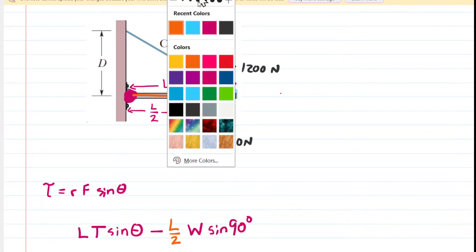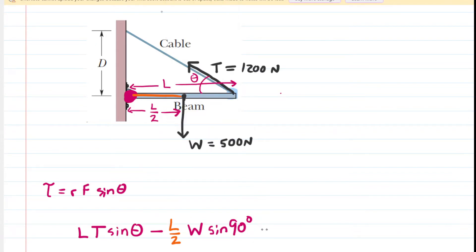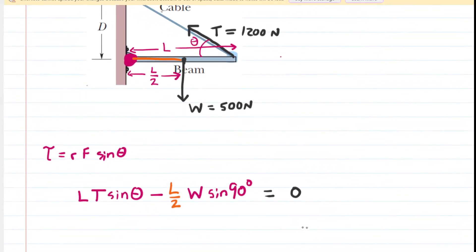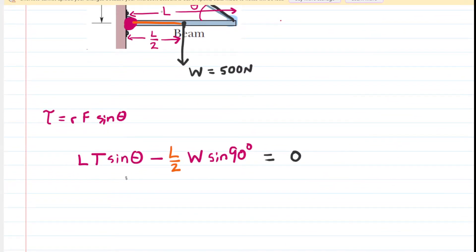Now because this beam is in equilibrium, the sum of the torques must equal zero. So we can safely set this equation equal to zero. And we're going to try to solve for the angle theta because that is what is unknown.